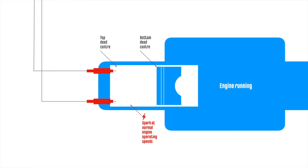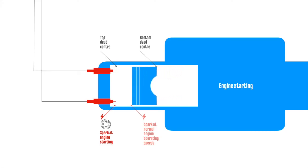The impulse coupling delays the spark at startup when the engine is slow to ensure that the piston is forced by the expanding mixture in the right direction.